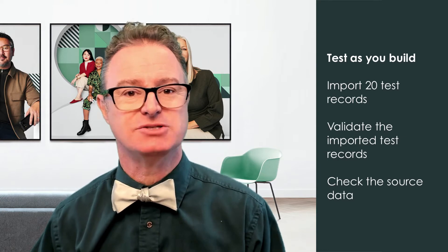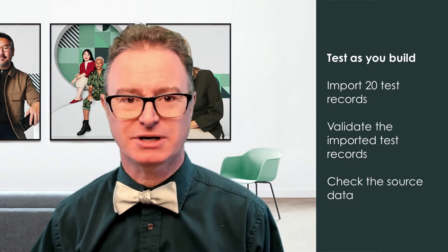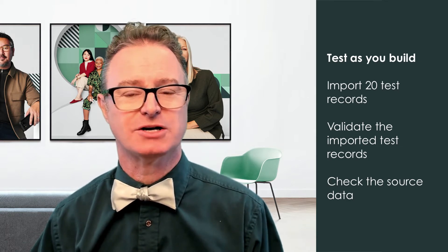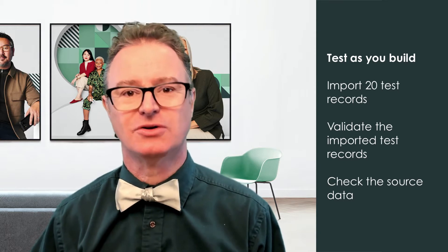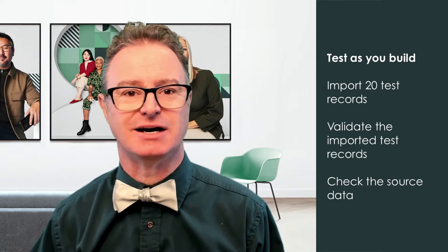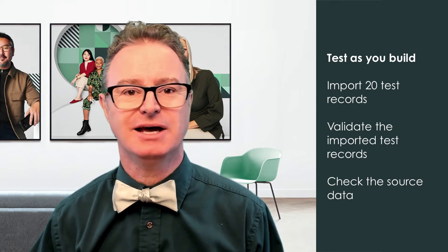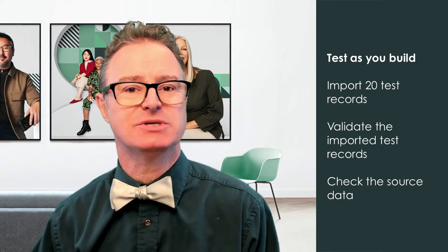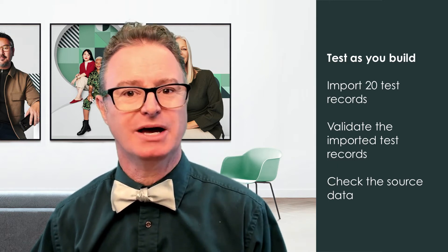A good practice is to test your import set as you build it. When you've defined the data source, try importing 20 test records. Check the progress page to ensure 20 records were inserted. If you get errors or ignored records, check the source data. This is also a good time to click the Loaded Data link to inspect a few import set records to see that the data was imported and the fields are the right type and size.